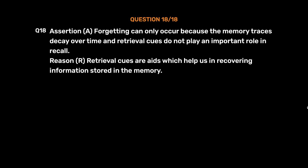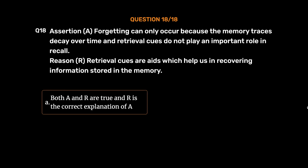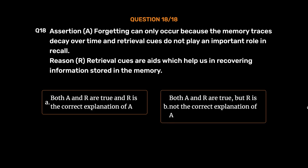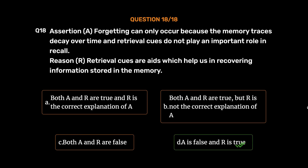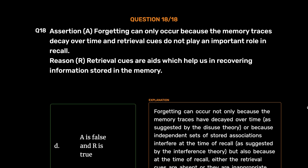Question number 18. Assertion A: Forgetting can only occur because the memory traces decay over time and retrieval cues do not play an important role in recall. Reason R: Retrieval cues are aids which help us in recovering information stored in the memory. Option A: Both A and R are true and R is the correct explanation of A. Option B: Both A and R are true but R is not the correct explanation of A. Option C: Both A and R are false. Option D: A is false and R is true. The correct answer is Option D. Forgetting occurs not only due to trace decay (disuse theory) or interference, but also because retrieval cues are absent or inappropriate at the time of recall. Thus A is false and R is true.